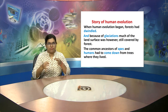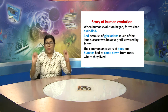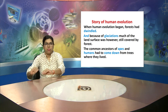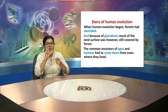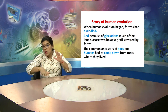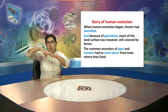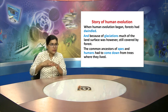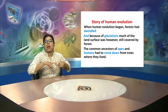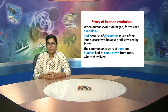Now we will discuss the story of human evolution. When human evolution began, forests had dwindled, and because of glaciation much of the land surface was still covered by forests. Because of glaciers melting, forests were drowned and went under water. As a result, the common ancestors of apes and humans had to come down from trees.